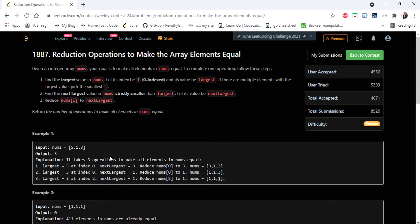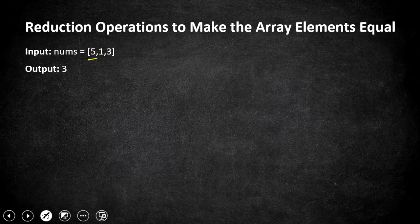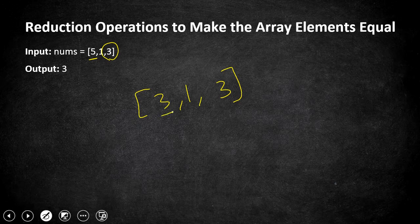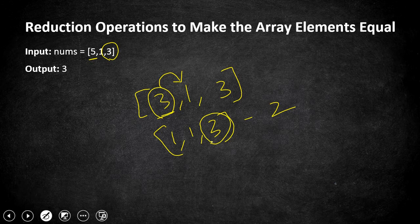Let's understand this problem with an example. In the given array, five is the largest element, so the first step is to replace it with the next largest, which is three. The array becomes [3, 1, 3]. Now we pick the largest again — if there are multiple equal elements, we take the one at the smallest index, which is index zero. We replace three with one, giving [1, 1, 3]. One more step converts the remaining three to one, resulting in [1, 1, 1] — that's step three, which is our output.